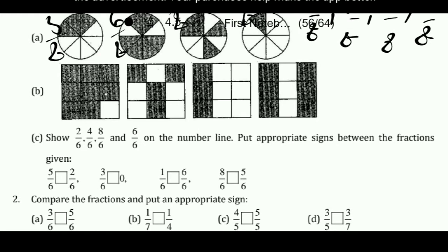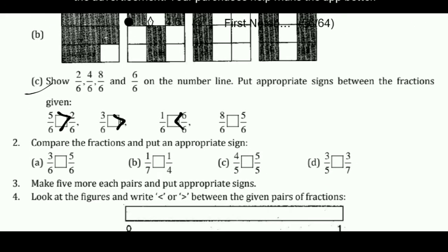After this, show 2 upon 6, 4 upon 6, 8 upon 6, and 6 upon 6 on the number line. Put the appropriate sign between the fractions given. In this one we have to put the correct sign. For example: 5 by 6 and 2 by 6 — which is greater? 5 by 6. Then 3 by 6 or 0? Answer is 3 by 6. And 1 by 6 or 6 by 6? Answer is 6 by 6. Like this, you can do it.